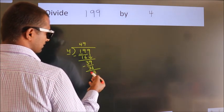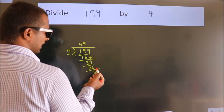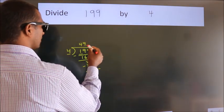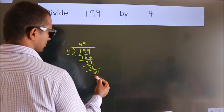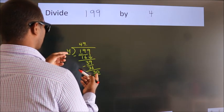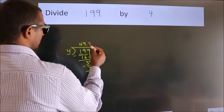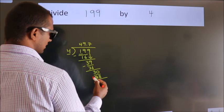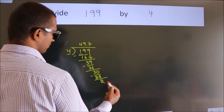After this, no more numbers to bring it down. So what we do is we put a dot and take 0. So 30. A number close to 30 in the 4 table is 4 times 7 equals 28. Now we subtract. We get 2.